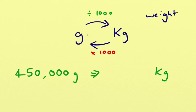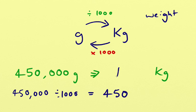So we have grams to start with and we want to get to kilograms. We're going to follow that arrow. We're going to divide it by a thousand. So 450,000 divided by a thousand, we would get 450. So that there is our answer. 450,000 grams is the same as 450 kilograms.